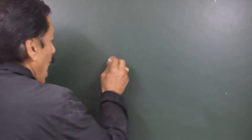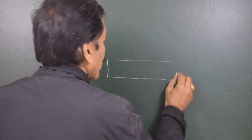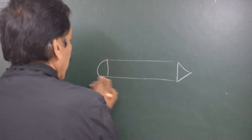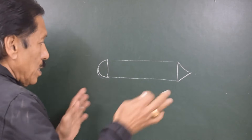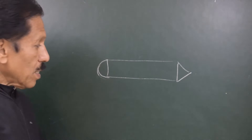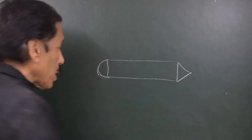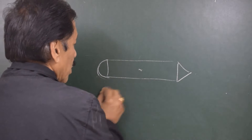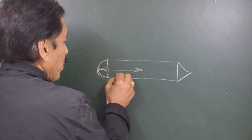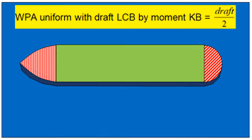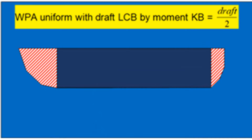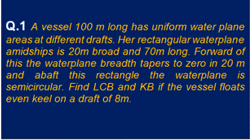Now if we look at a non-uniform shape and the water plane area is the same for all drafts, we can say that KB is draft divided by 2. But to find out the position of LCB, we will have to take moments — about aft, about forward, or any other convenient point. Let me do a few numerical examples from my book on complete ship stability, chapter on calculation of KB and LCB.